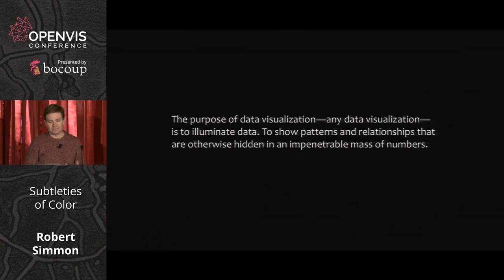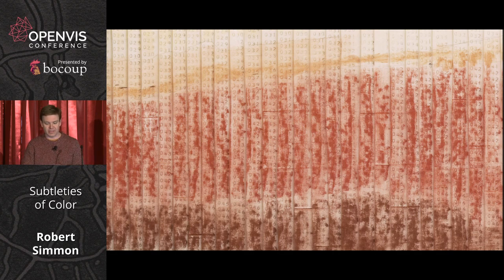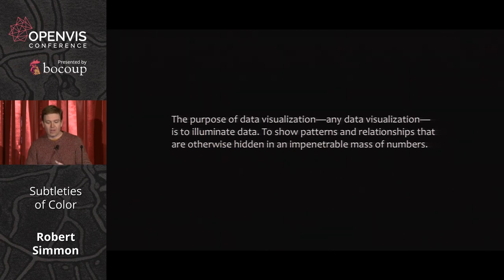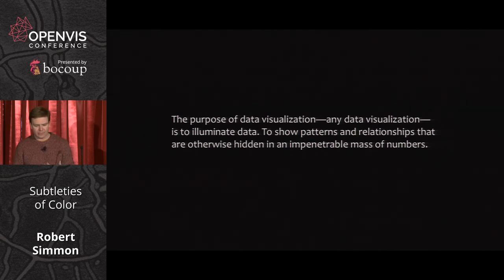The purpose of data visualization - pretty much any data visualization - is to illuminate the data and to show patterns and relationships that are otherwise hidden in an impenetrable mass of numbers. If you just had the numbers, you really wouldn't be able to see the patterns. But by color coding them, you can see patterns that represent the surface of another planet. Color, for this type of spatial data with X, Y, and Z dimensions, is one of the most effective and certainly the most common way of conveying that information. Careful use of color can enhance clarity, aid storytelling, and draw a viewer into your data set. But poor use of color can obscure data or even mislead.